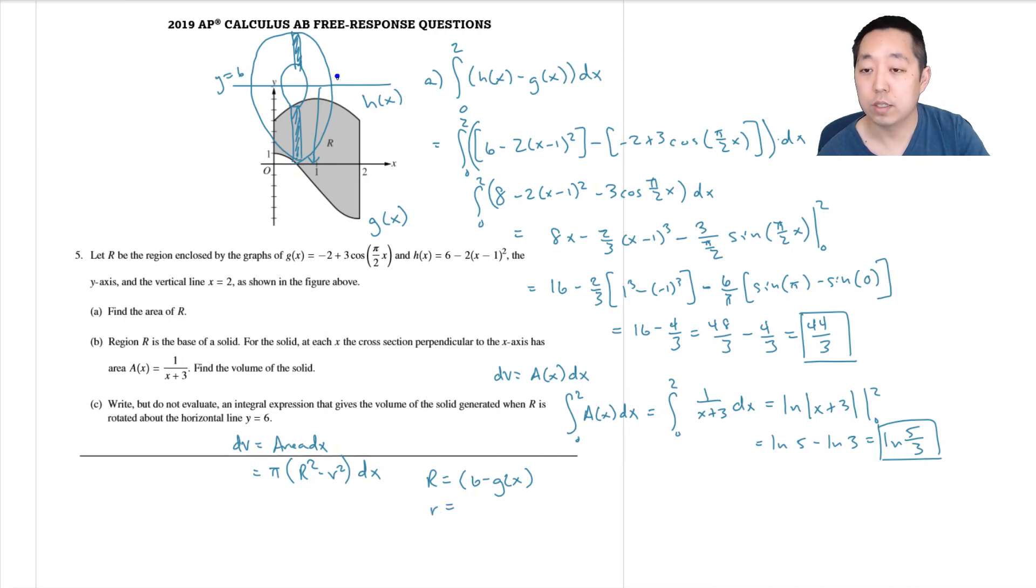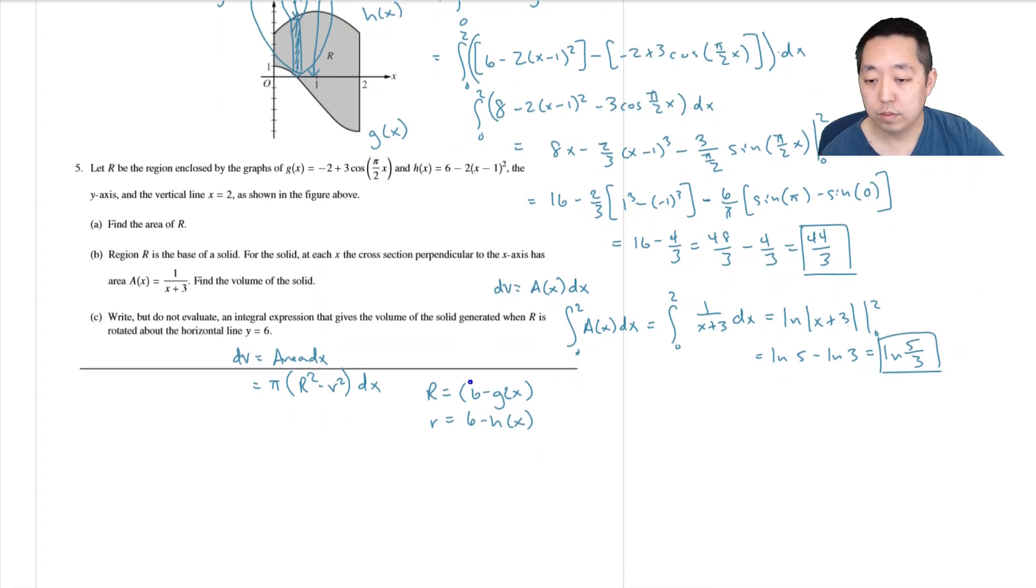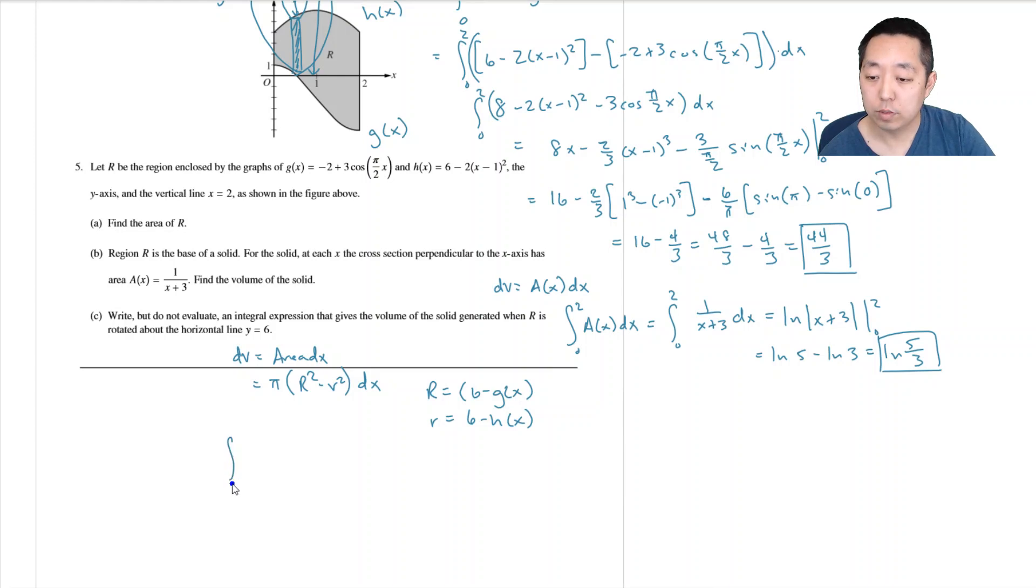And little r is also the distance from here to h of x. So it's 6 minus h of x. So my integral, then, is going to be the integral from 0 to 2.